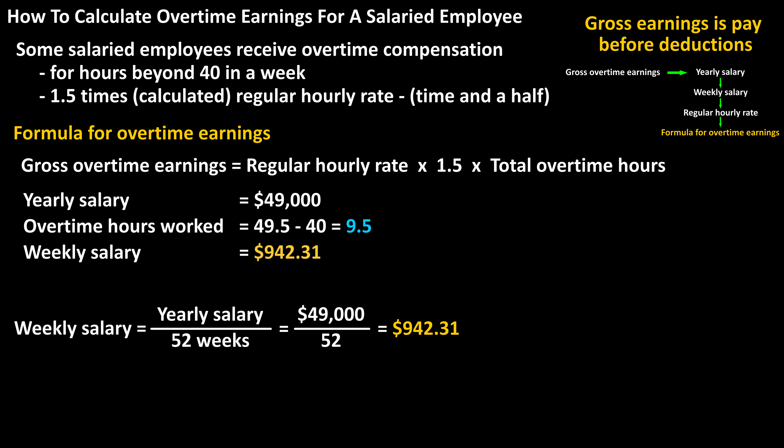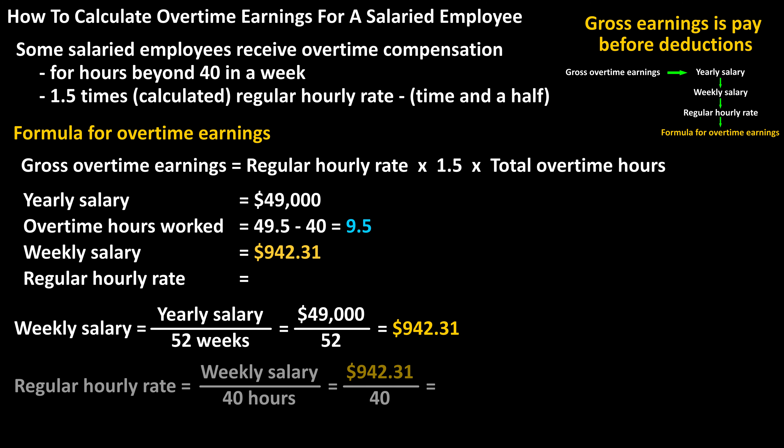Now we can calculate their regular hourly rate, which is: hourly rate equals weekly salary divided by 40 hours. So $942.31 divided by 40, and this calculates to $23.56 rounded off as their regular hourly pay rate.